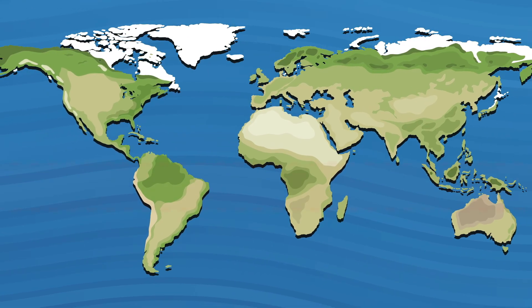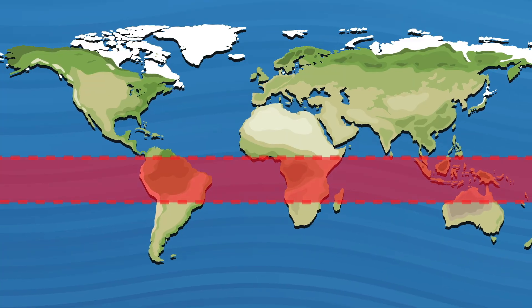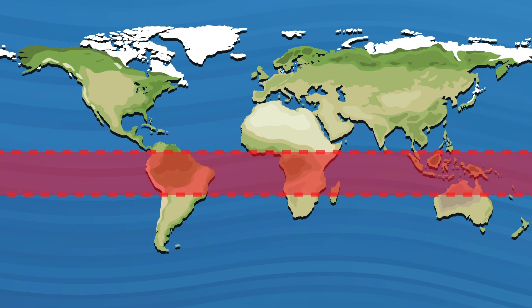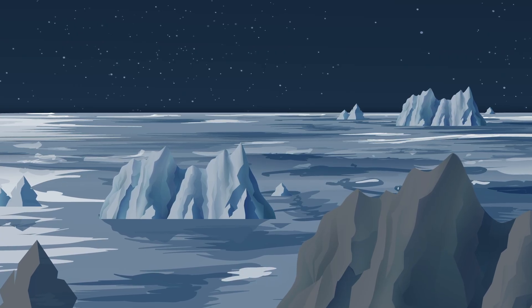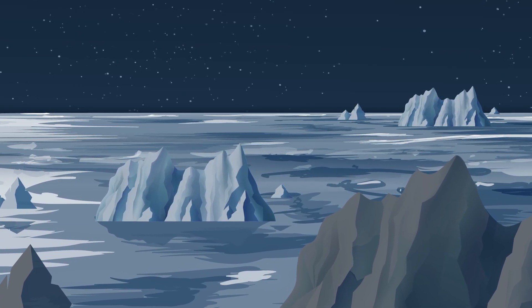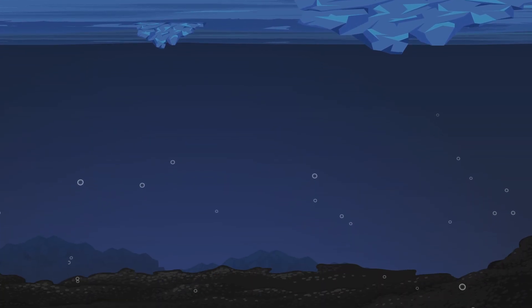Bodies of water, including the ocean's surface, would freeze over, covering much of our planet in ice. Only parts of the deep sea may remain in a liquid state, insulated by layers of ice and warmed by geothermal heat.